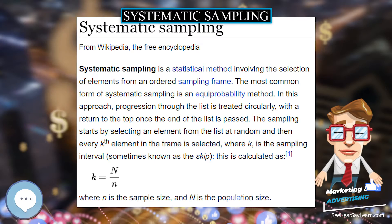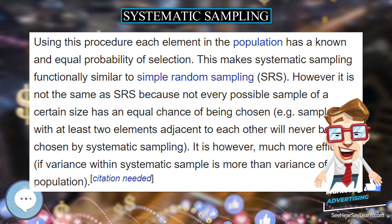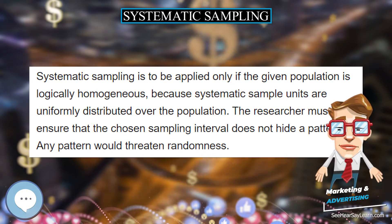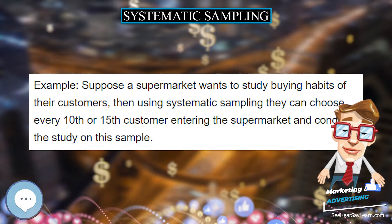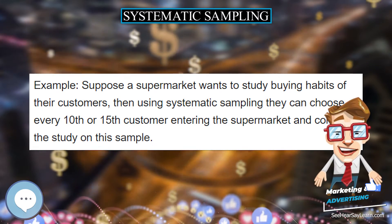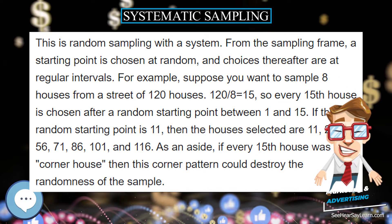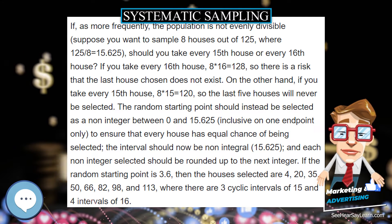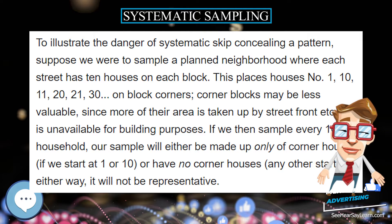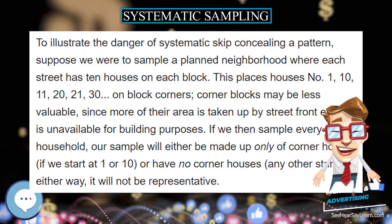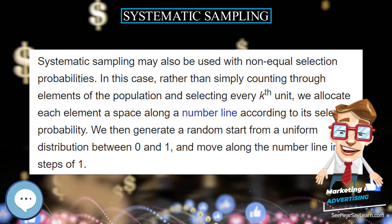Systematic Sampling is a statistical method involving the selection of elements from an ordered sampling frame. The most common form of systematic sampling is an equiprobability method. In this approach, progression through the list is treated circularly, with a return to the top once the end of the list is passed. The sampling starts by selecting an element from the list at random, and then every kth element in the frame is selected, where k is the sampling interval, sometimes known as the skip. This is calculated where n is the sample size and N is the population size.